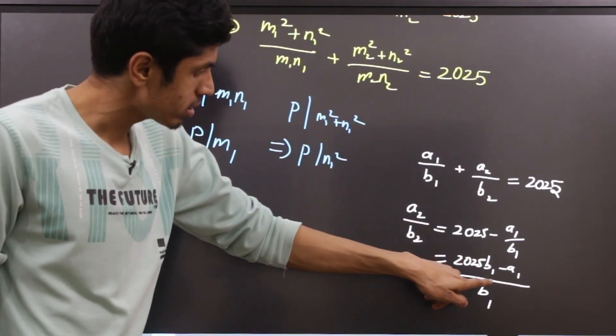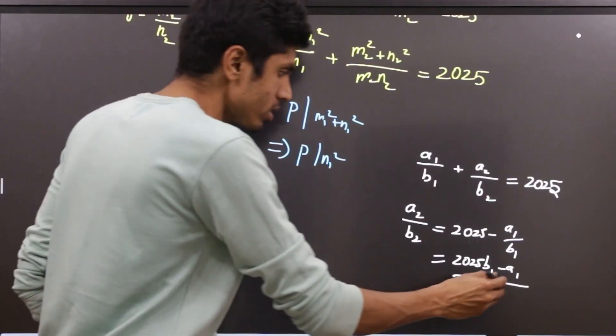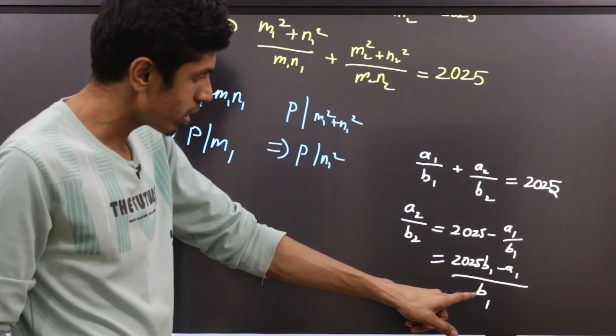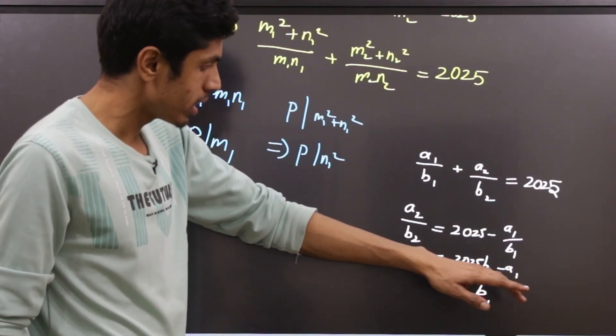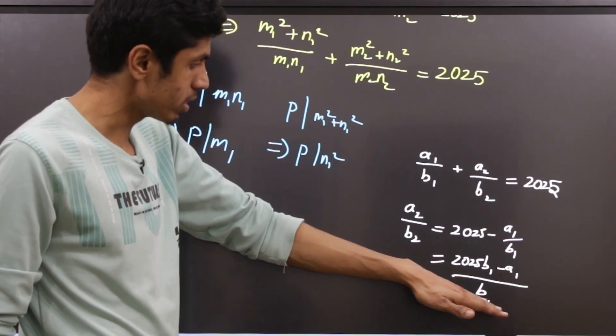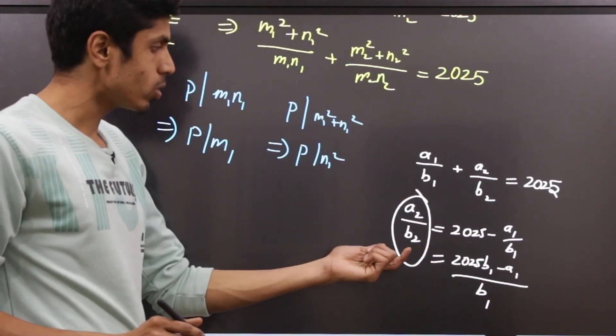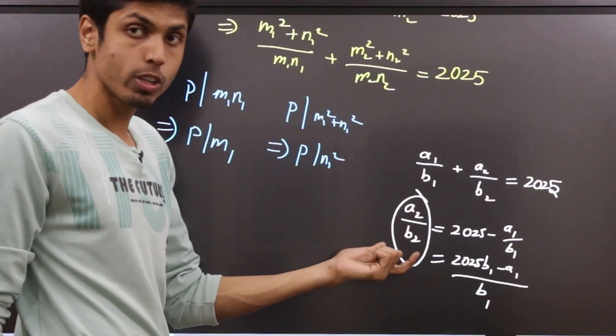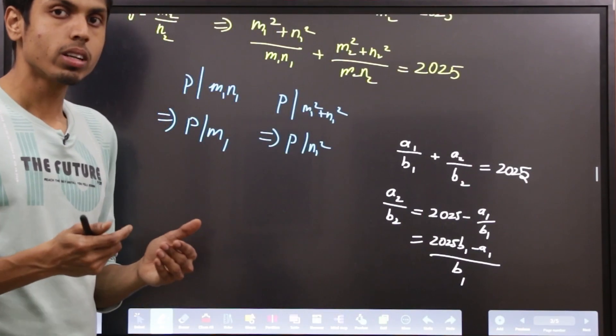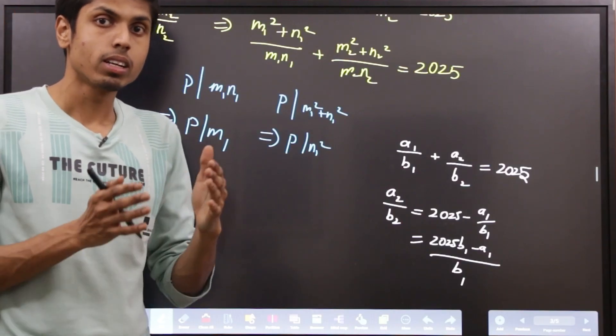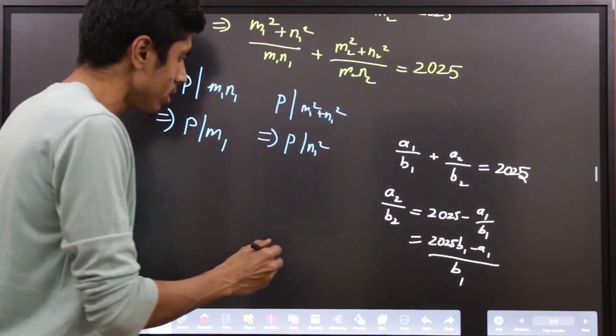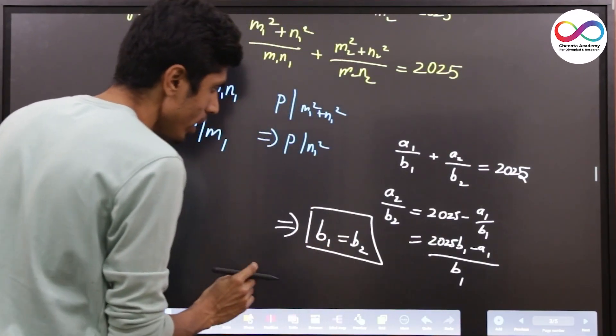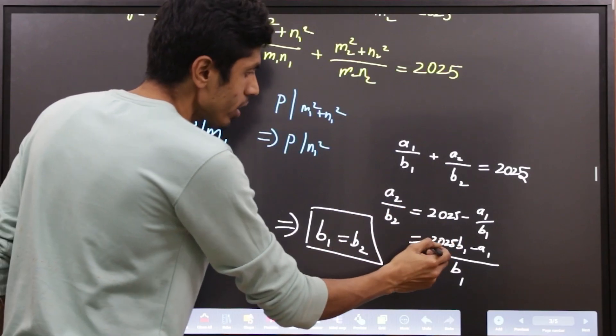Observe, this fraction is reduced because any prime divisor of b1 cannot divide a1. Therefore, they cannot share any prime factor, and a2/b2 is also a reduced fraction, and any rational number will have a unique reduced representation. Therefore, we conclude that b1 = b2 and a2 = 2025b1 - a1.